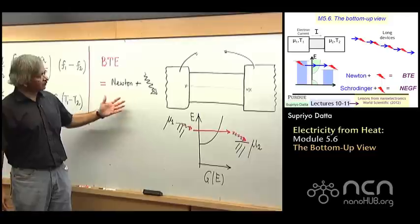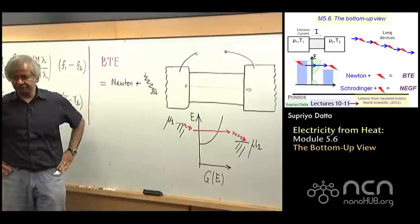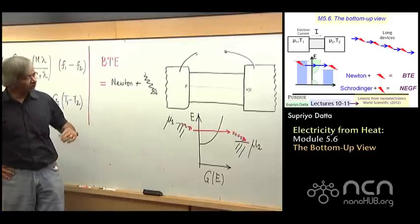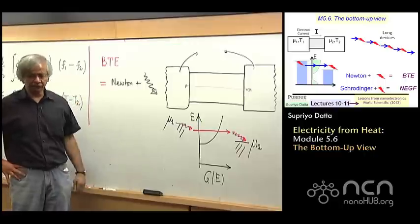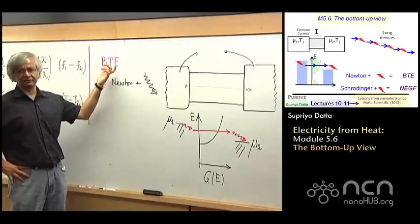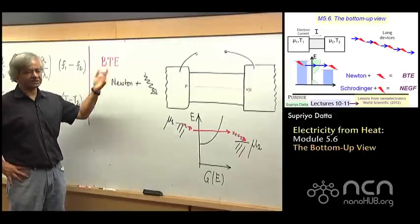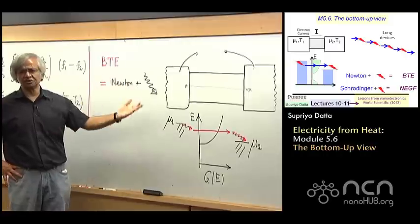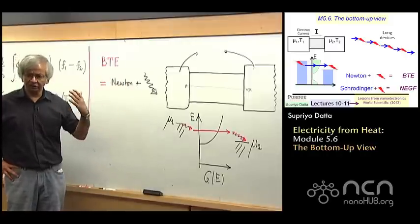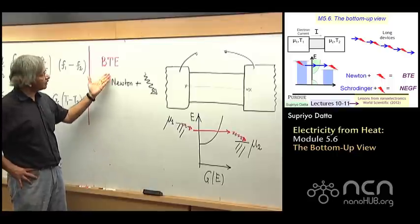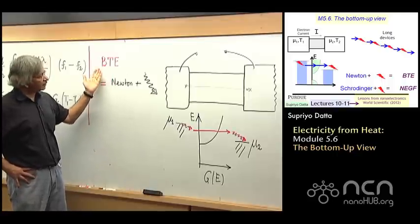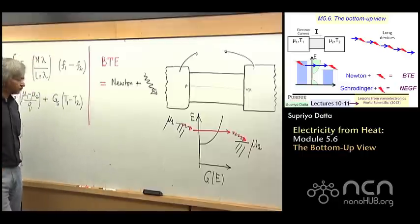In general, in the semi-classical picture, all discussions of transport, all discussions of current flow, usually start from the Boltzmann Transport Equation. That's like widely used, in fact, not just for electrons, for things like neutrons, phonons, all kinds of things.